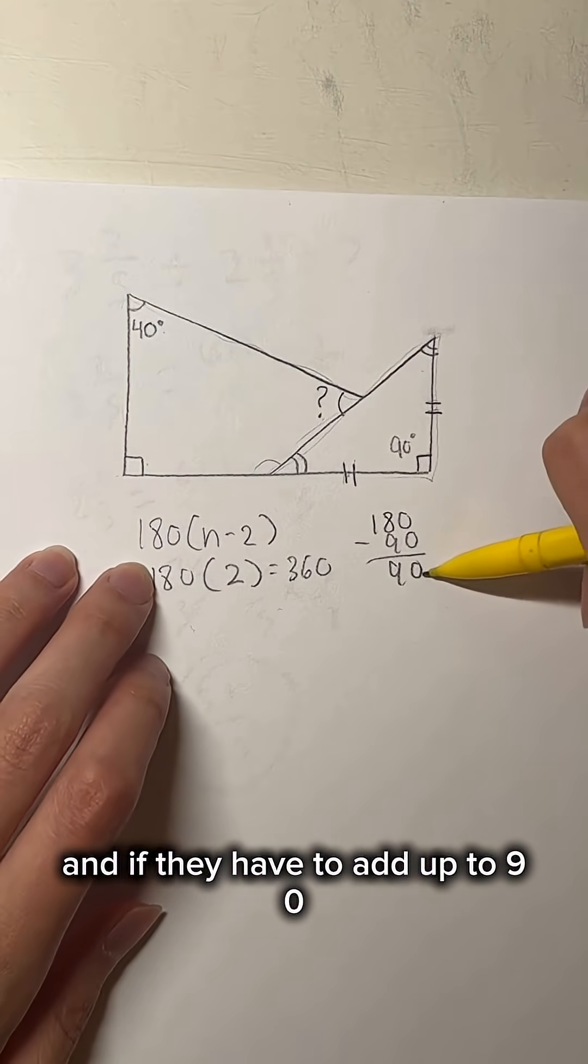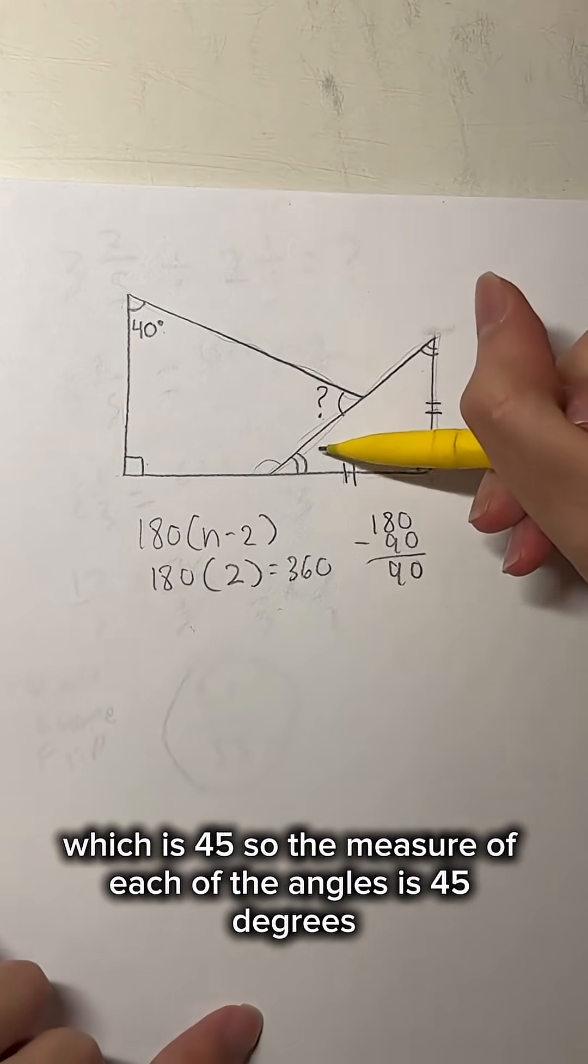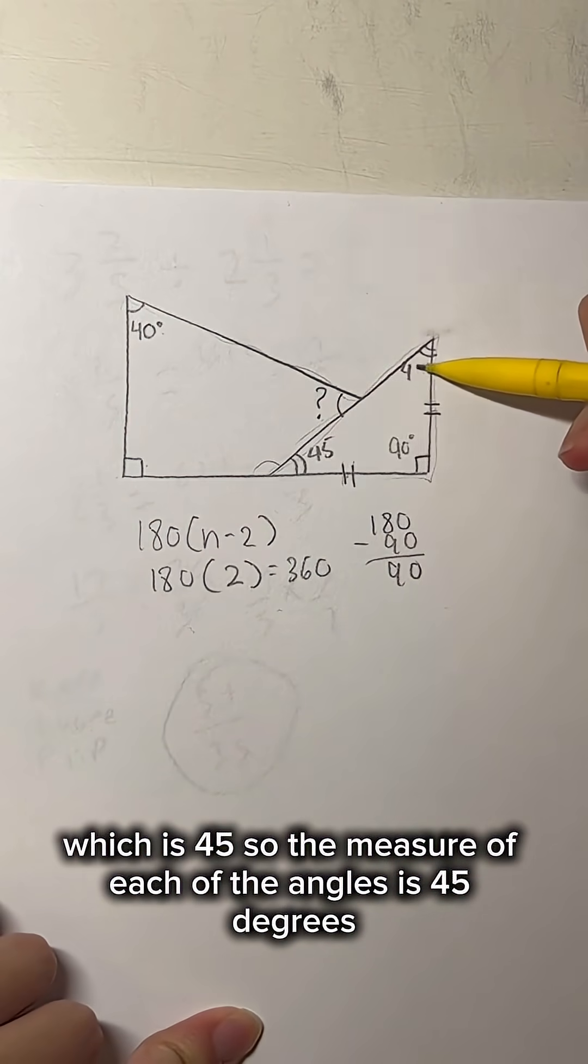And if they have to add up to 90, then we just do 90 divided by 2, which is 45. So the measure of each of the angles is 45 degrees.